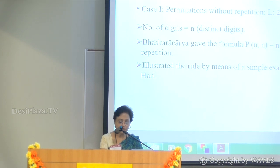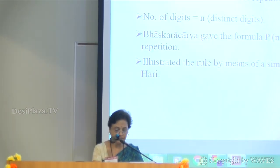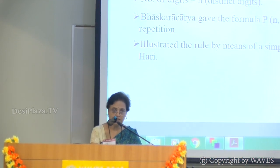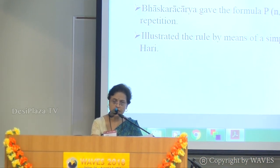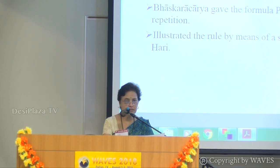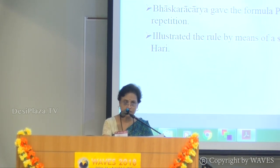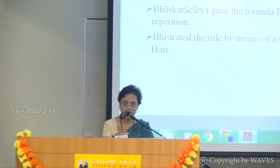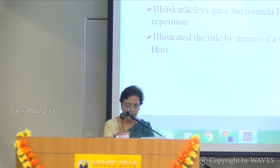Bhaskaracharya first gave the rule for permutations without repetition and gave the formula P(N,N) = N factorial. As an example, he gave a list of ten weapons and asked us to find out the number of idols of Shambhu. Shambhu has ten weapons in ten hands, so the number of idols possible is ten factorial. Ten factorial equals ten into nine into eight... down to one, which comes out to 3,628,800.